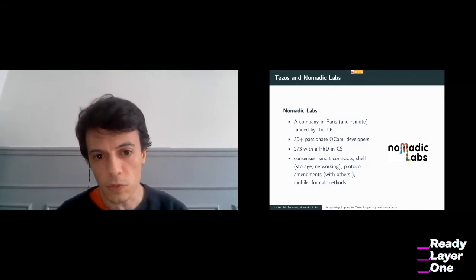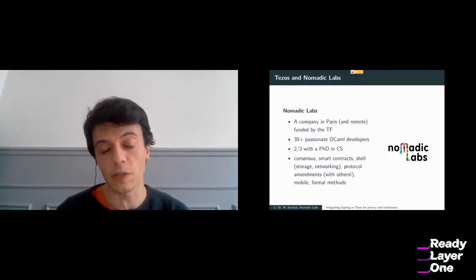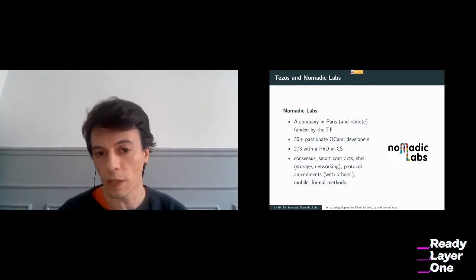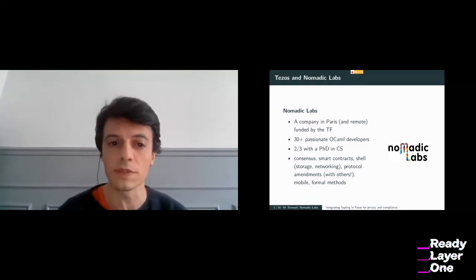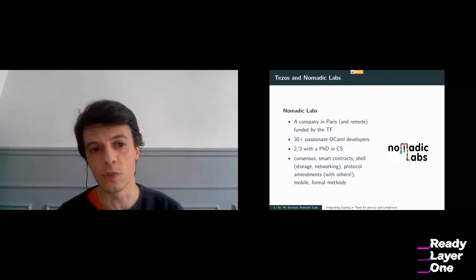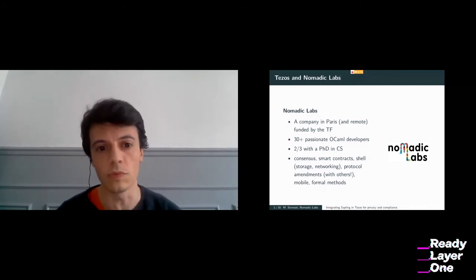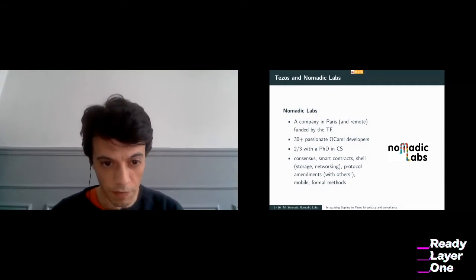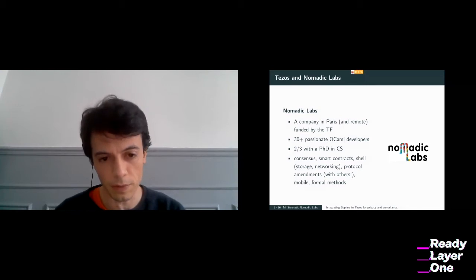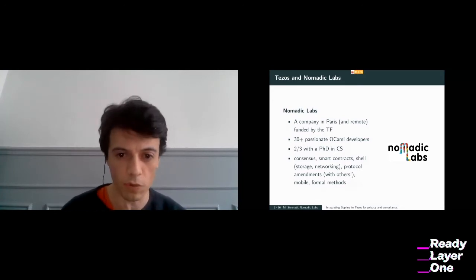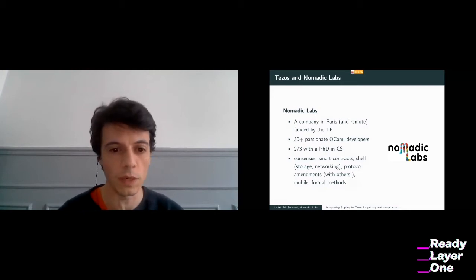We work on everything from the interpreter to formal methods applied to smart contracts — that's another big topic for us, verification of contracts. There is also practical work on what we call the shell: the low-level bits of the Tezos node containing storage and networking. We've been working from the beginning on protocol amendments, since Tezos is the self-amending crypto ledger — there's a mechanism that allows the protocol itself to evolve over time.